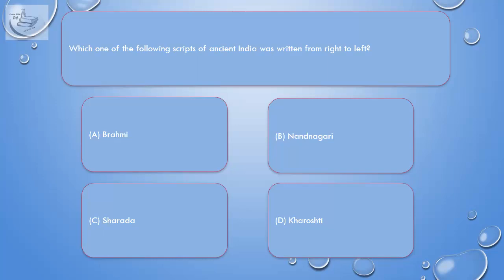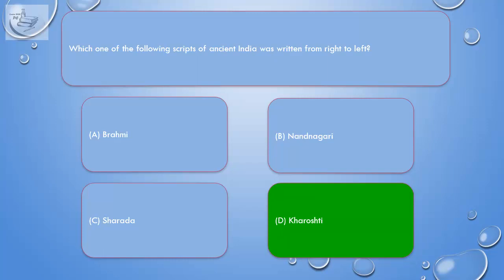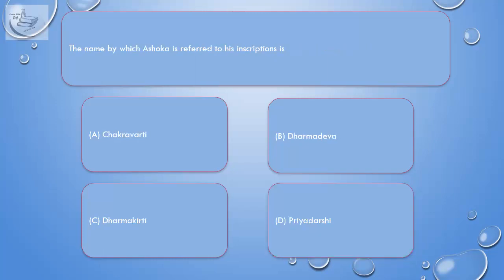Question: Which one of the following scripts of ancient India was written from right to left? A. Brahmagiri, B. Nandnagari, C. Sharada, D. Karashti. Correct answer is D. Karashti.